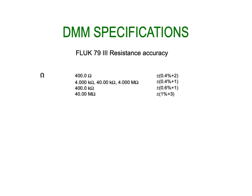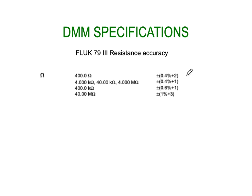The meter shown was a Fluke 79 3 series, and it has an accuracy of around 0.4% at 220 ohms. Since we were reading 220 ohms, the accuracy would have been 0.04% — a very, very accurate meter.